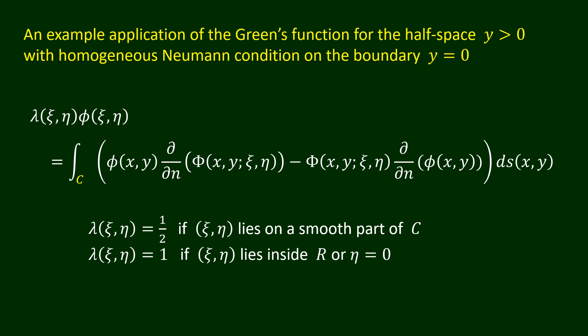Hence, with the use of the special Green's function, the boundary integral solution of the potential problem requires integration over only the interior boundary c. The boundary condition on y equals 0 and the far field condition are automatically satisfied. If capital Phi is taken to be the usual fundamental solution instead of the special Green's function for the half space with the homogeneous Neumann condition, the path of integration would have to include the entire x-axis. This shows clearly the advantage of using the special Green's function.